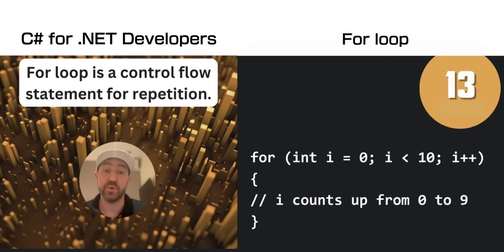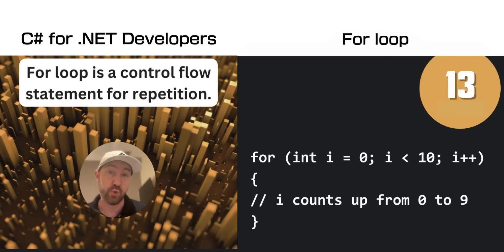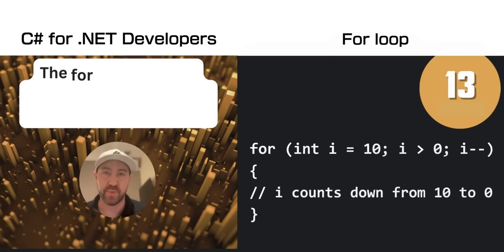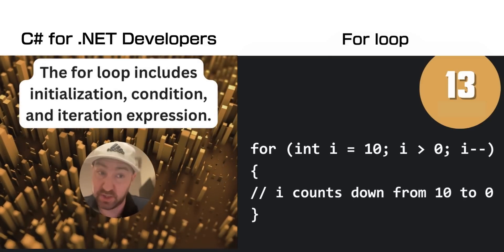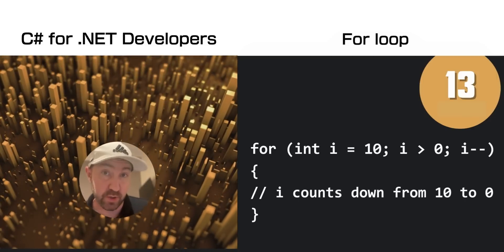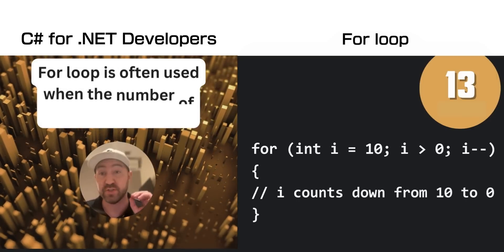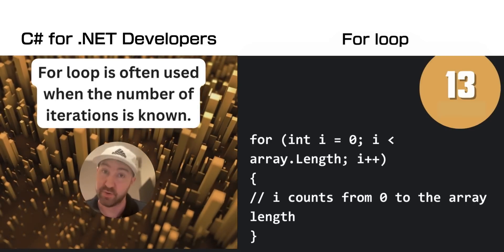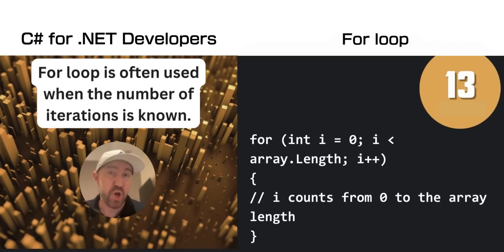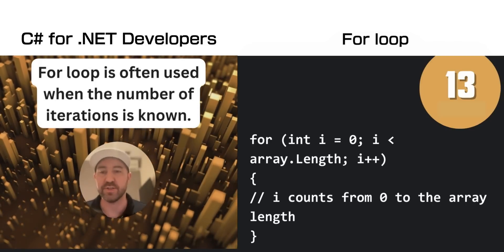A for loop is used when you want to do some repetition — it is a control flow statement. There is an initialization part for setup, a condition which defines whether the loop should continue running or not, and then iteration which runs every time the loop is iterated on. You would normally use a for loop when you know how many times you need to iterate.